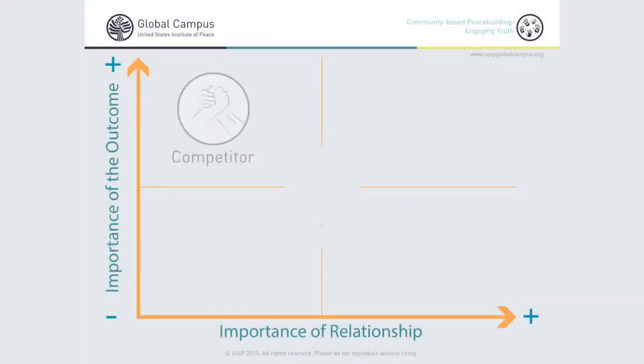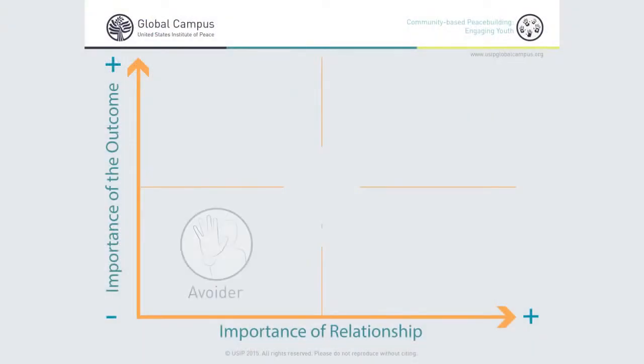In the upper left corner we have competing. Somebody who takes a competing approach in a given situation is very interested in the results — the outcome of the conflict — and is less interested in the relationship and maintaining the relationship.